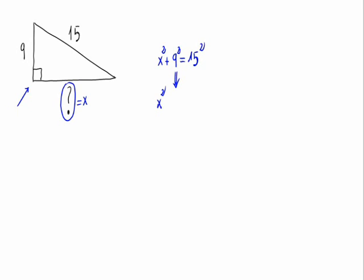That gives us X squared plus 81 equals 225. So X squared is equal to 225 minus 81, which means X squared equals 144.